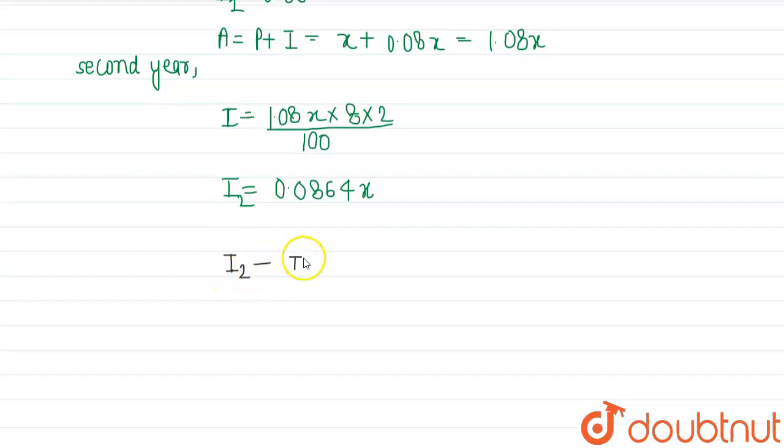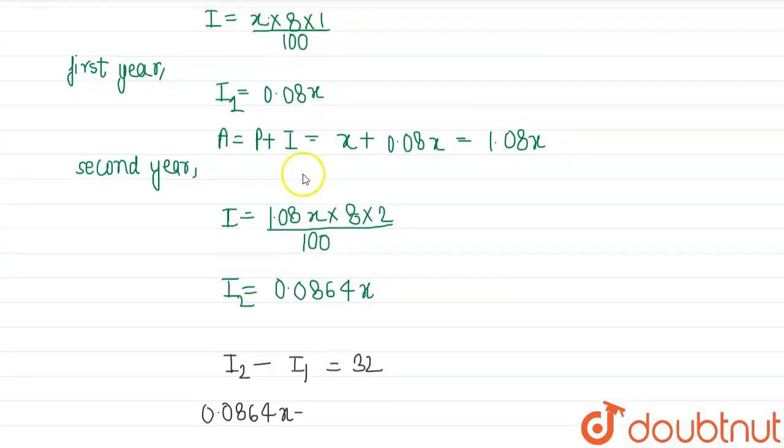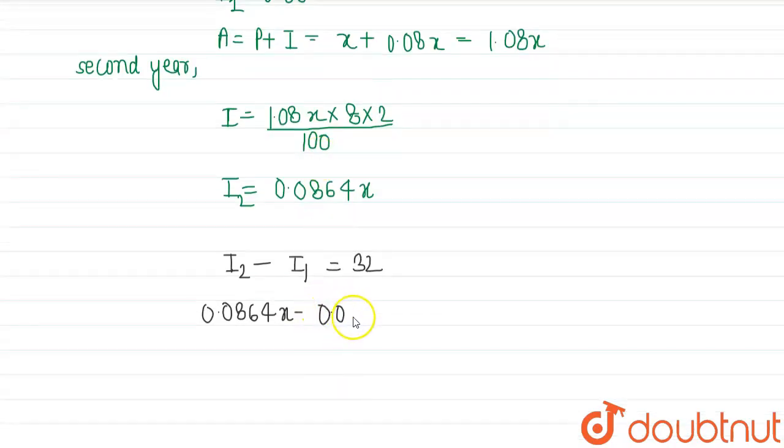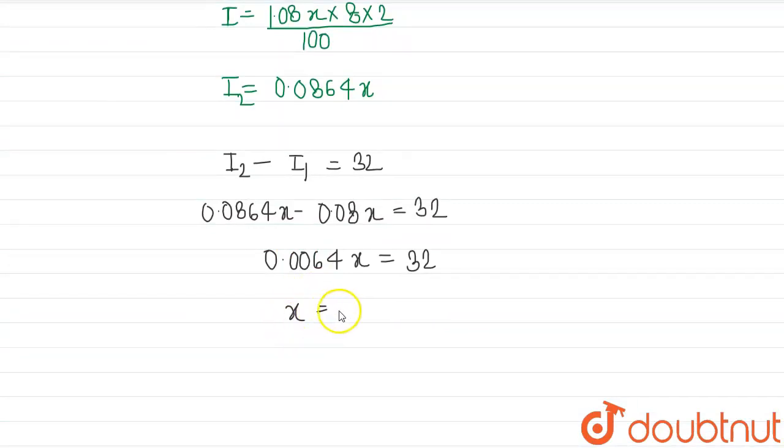Now we can place these values: 0.0864x - 0.08x = 32. So now this will be 0.0064x = 32. We need to find the value of x, so x = 32... this is 4 places after the decimal, so this will be 10 to the power of 4, that is 10,000, divided by 64. So this will be 5000.